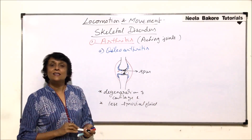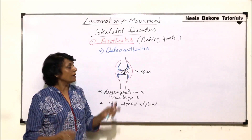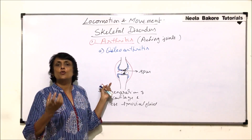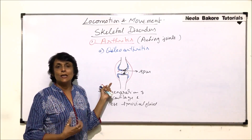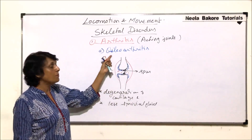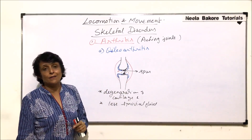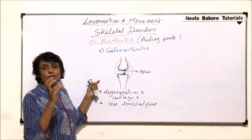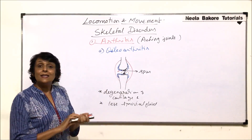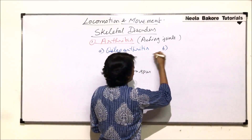Osteoarthritis is also age-related. As we get older, tissues start to degenerate, so this kind of disorder may appear. This type of arthritis is known as osteoarthritis because it is directly related to bone and cartilage.